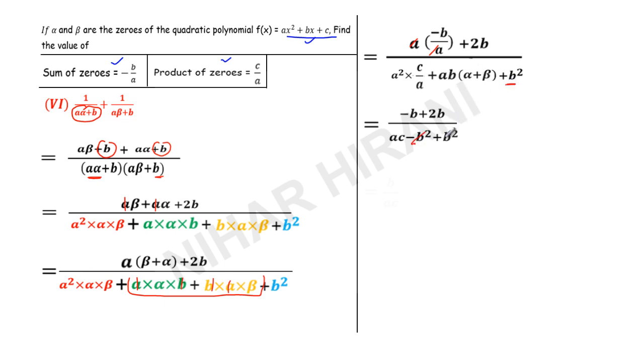So this is minus b square, and I copied this plus b square. Now minus b square plus b square cancelled. If you simplify the numerator, that will be only b, minus 1b plus 2b will be plus b upon ac, and that is my answer.